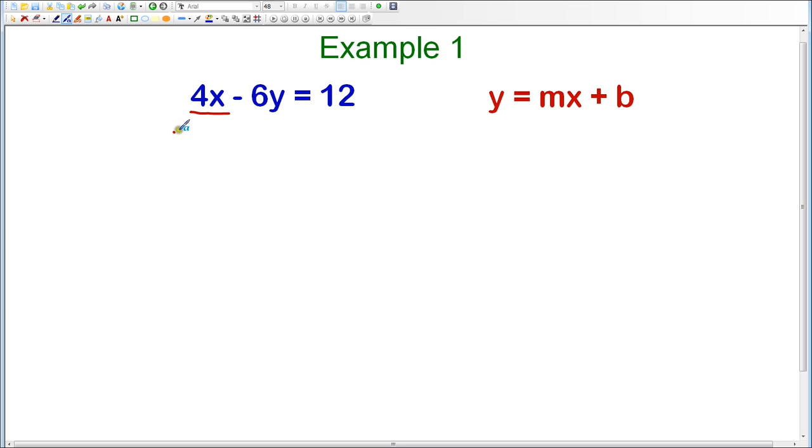So we're going to start with what we have on the left-hand side, which is 4X, and I'm going to subtract 4X. And when I do this, I'm going to write it right beside the 4X so that I write my like terms together. So I'm subtracting 4X from the left-hand side because I want to get rid of that and move it over to the right-hand side.